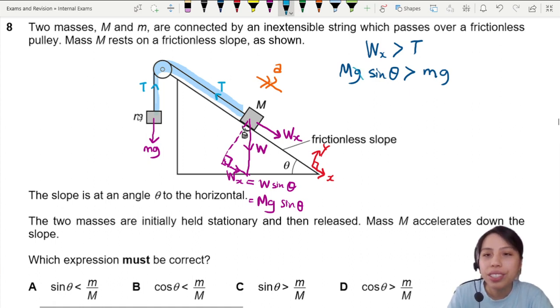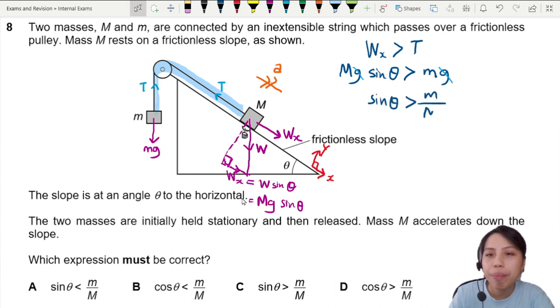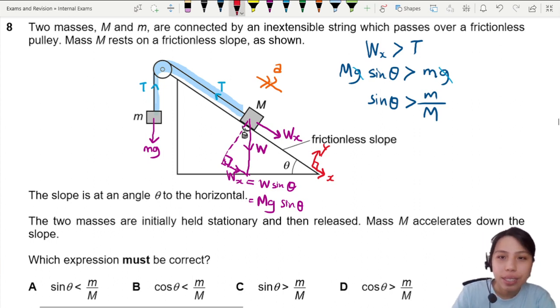Now we simplify. G and G cancel out. What next? You look at the answer, they all put the sine, cosine, sine, cosine. So we separate the sine and cosine. Sine theta greater than small m divided by big M. This is our answer. So that will be the best choice here. It will be sine theta, sine greater than. So this one is the best choice. C.